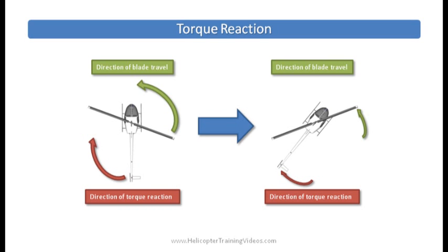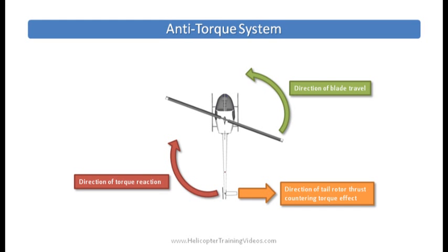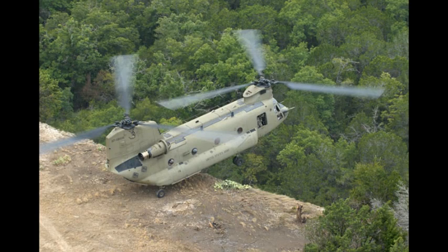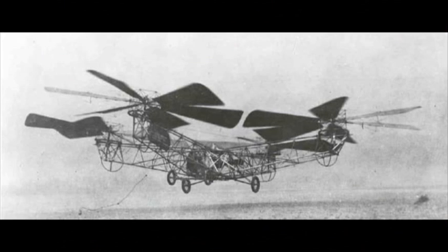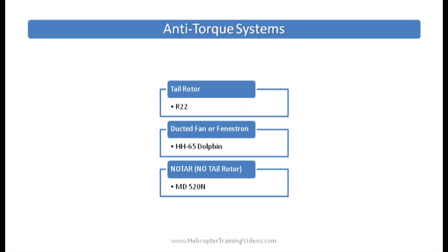The torque reaction wants to swing the helicopter in the opposite direction, so as the blades go counter-clockwise the body would spin clockwise. We have a tail rotor to stop that — that's an anti-torque system in a traditional helicopter. Helicopters with multiple main rotors, like Chinooks, don't need a separate anti-torque system because the rotors turn against each other and cancel the torque. So we only talk about anti-torque systems in traditional single main rotor systems, and there are three main types.